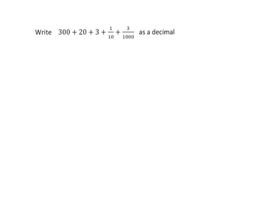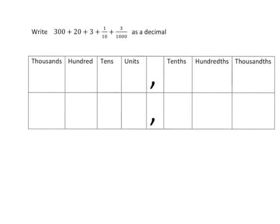If we're asked to write 300 + 20 + 3 + 1/10 + 3/1000 as a decimal, the easiest way to do it is just to quickly put it all into a nice place value table.